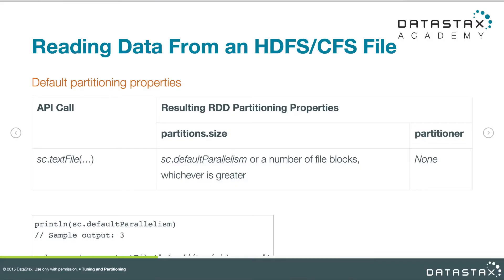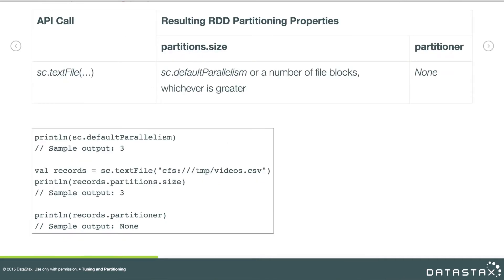The situation is similar when reading a text file from the filesystem or HDFS. It does the same calculation: estimate the size of the input data, divide by 64 megabytes, and come up with a number. If that's bigger than default parallelism it'll use that, otherwise it goes with default parallelism. As you can see in the example, that is happening, and the partitioner again returns as none.